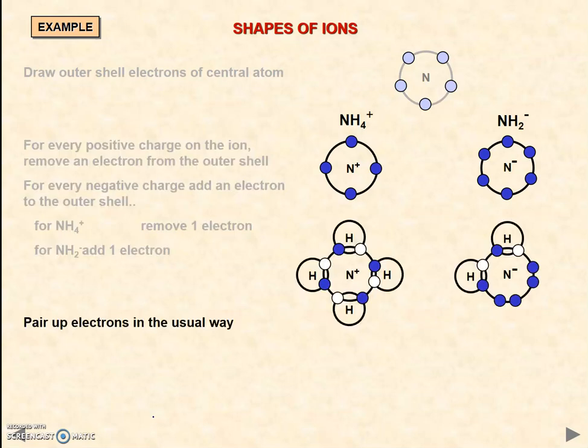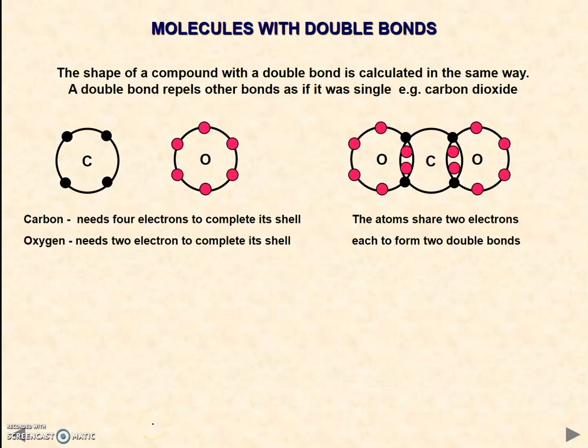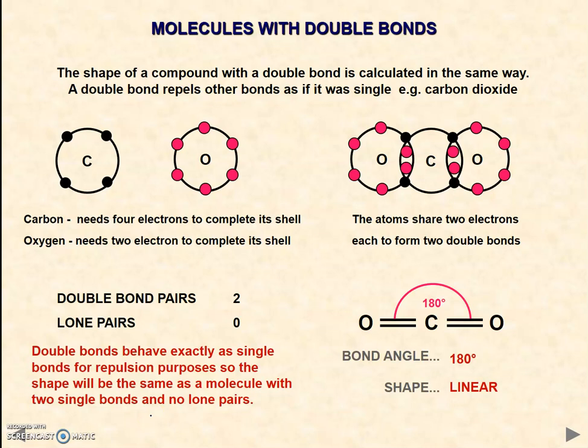This is just an example of both a positive and a negative ion and how that affects the shape. A couple of notable aspects: molecules with double bonds. For the purpose of shapes of molecules, double bonds are regarded as the same as single bonds. Therefore, carbon dioxide will still be a linear shape and we'll say that we've got two bonding regions here, two double bond pairs or two bonding regions. Therefore, it's a linear shape with a bond angle of 180 degrees.